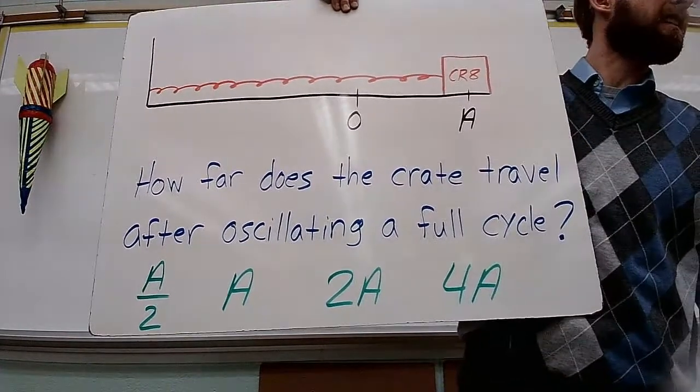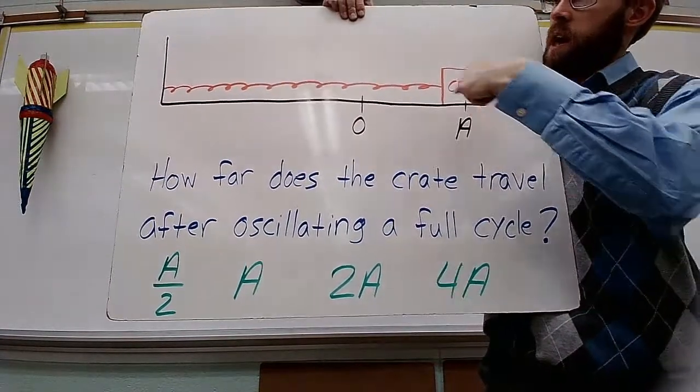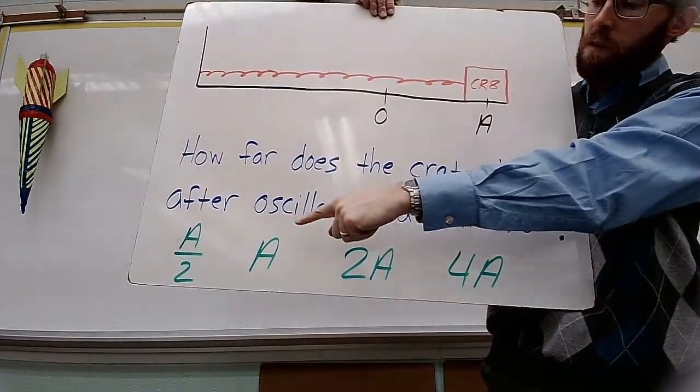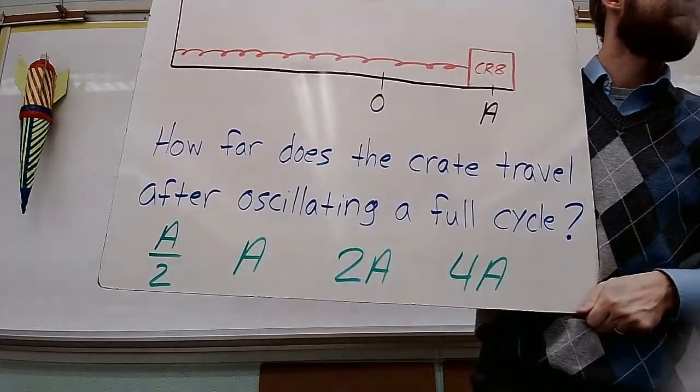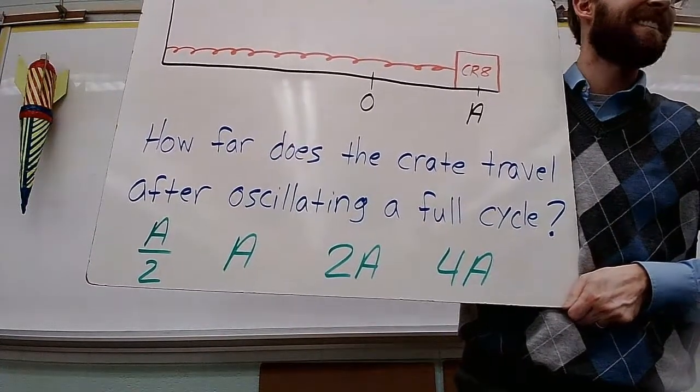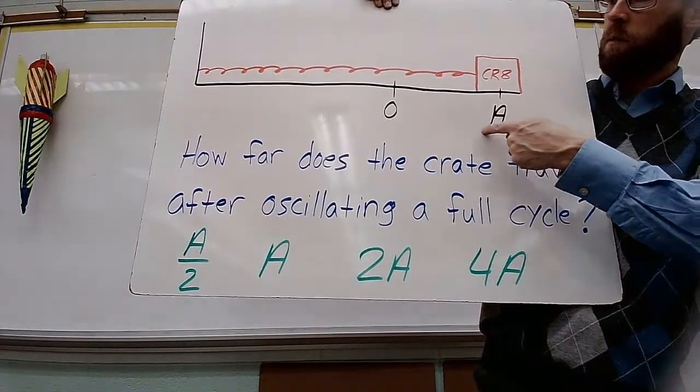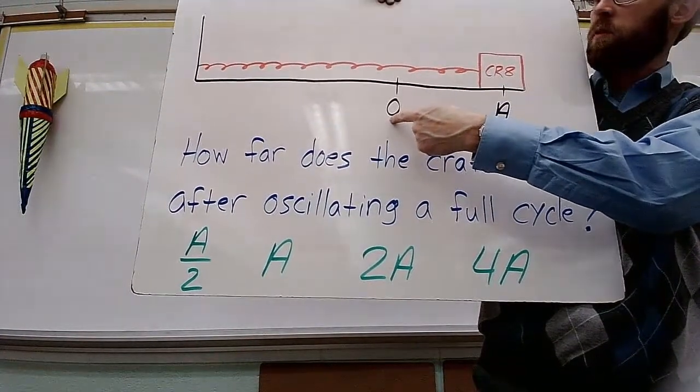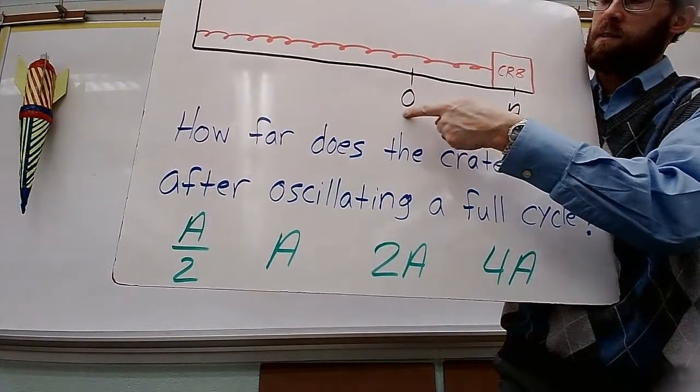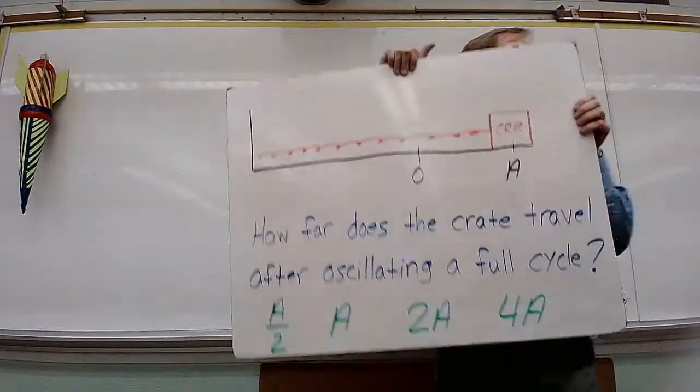So we've got this crate here. And the crate is stretched to an amplitude A. And after the person lets it go, it oscillates back and forth in one full oscillation. How far does it go? Does it go A over 2? A, 2A, or 4A? I heard 4A more than any other answer, and that's good because it's the correct one.